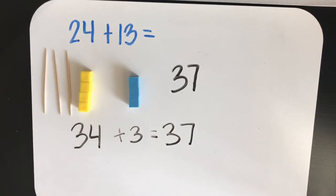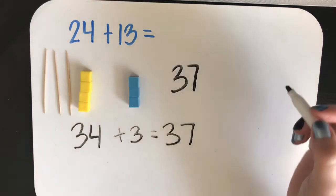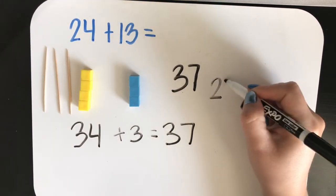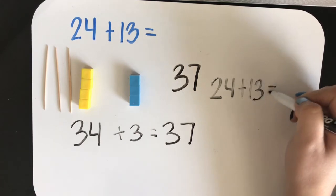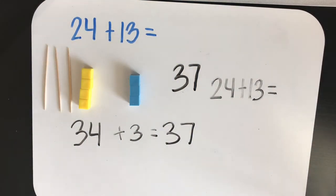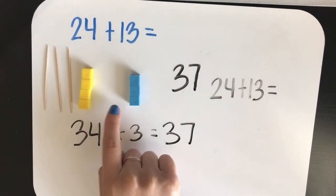Another way to show our thinking is by using a number bond. We are going to write the problem again. 24 plus 13 equals... Stop and think what was the first thing that we did. We added the ten.